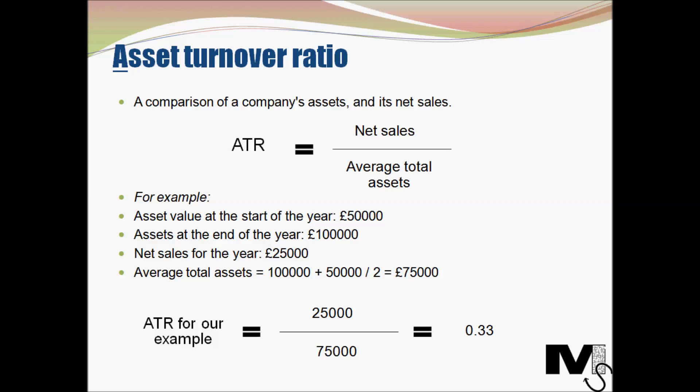For example, if a company's asset value at the start of the year is £50,000 and at the end of the year is £100,000, and net sales for the year is £25,000, then the average total assets would be £100,000 plus £50,000 divided by two, which equals £75,000. So the asset turnover ratio is £25,000 divided by £75,000, which is 0.33 — meaning the business generates £0.33 for every £1 spent on assets.